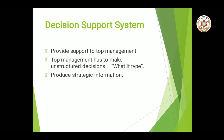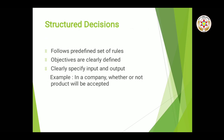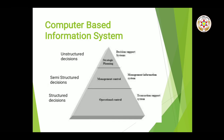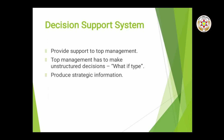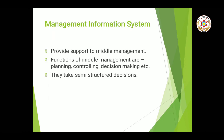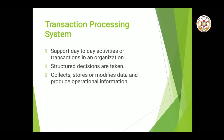Ab hum padhenge computer-based information system ke types. We have three types. Number one is your Decision Support System — DSS. DSS aapka unstructured decisions leta hai, and these decisions are taken by your senior management — 'what if' type decisions. Jaise: agar hum ye project lenge toh kya hoga? Next one is your Management Information System — MIS — jo middle management leta hai.